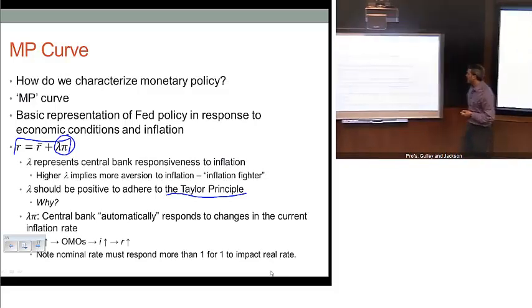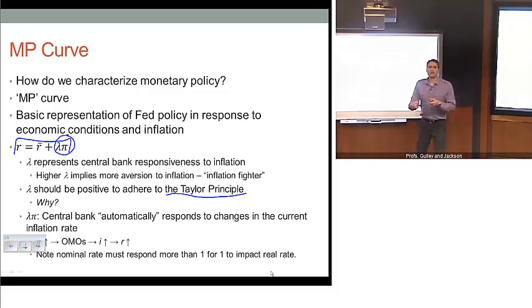This lambda π term is the response that central banks have to adjustments in the inflation rate. We want to be more specific because it's adjustments to changes in the current inflation rate. As the current inflation rate changes, the Fed is sort of going to automatically be adjusting its monetary policy response.